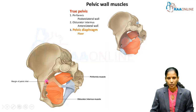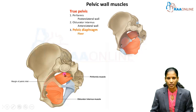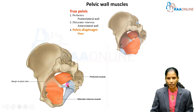The cavity present below the pelvic inlet is called the true pelvis. Each pelvic cavity has two lateral walls and a floor. In each lateral wall we can see two notches called the greater sciatic notch and the lesser sciatic notch. These notches are converted into foramina by two ligaments: the sacrospinous ligament and the sacrotuberous ligament.